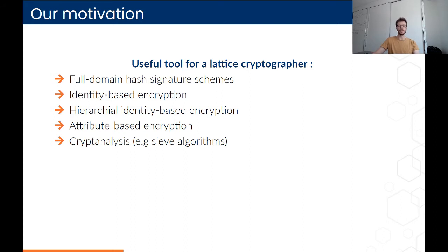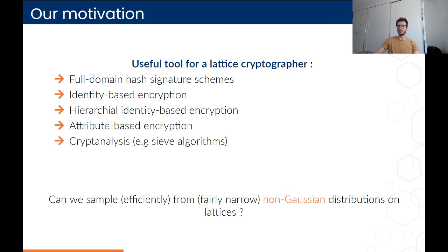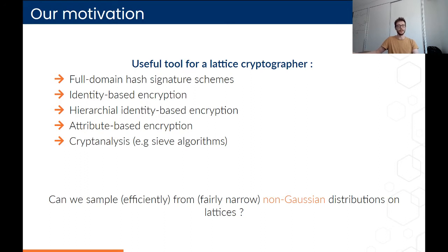For example, Gaussians are suited to the Euclidean norm, but one may need to sample from a distribution suitable to the L1 norm or the L-infinity norm, and that's where our framework can become really useful. The question is: can we sample efficiently from fairly narrow non-Gaussian distributions on lattices? The answer is pretty much yes, depending on your definition of efficient and fairly narrow. Our framework offers a trade-off between time and width of the sample distribution.